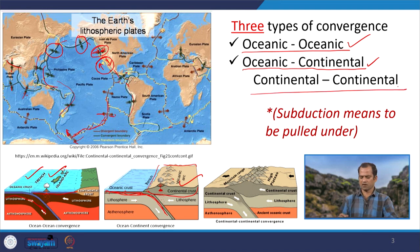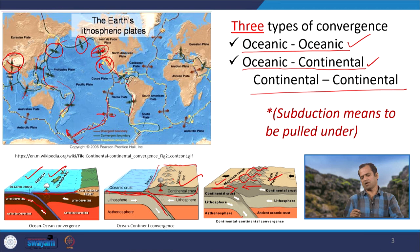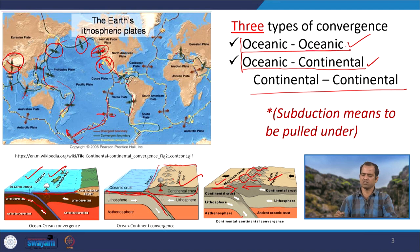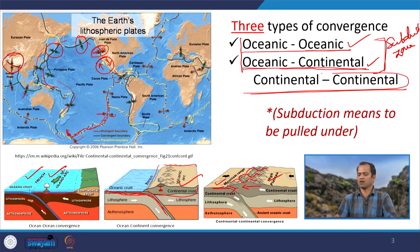The third type is continental-continental convergence, where both plates are continental, so neither will move down. The two plates collide and we get a collisional mountain system like the Himalayas. The first two types — oceanic-oceanic and oceanic-continental — give rise to subduction zones, while continental-continental convergence gives rise to a collisional zone.